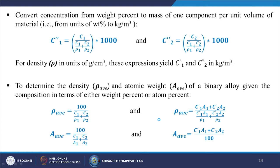To convert concentrations from weight percent to mass per unit volume (kg/m³): C1'' = C1 / (C1/ρ1 + C2/ρ2) × 1000, and C2'' = C2 / (C1/ρ1 + C2/ρ2) × 1000, where density ρ is in g/cm³. From these expressions we can also calculate the average density and average atomic weight of the alloy constituents.